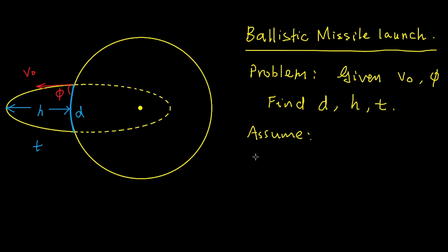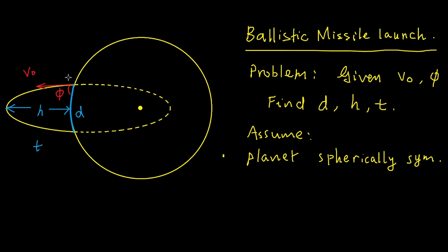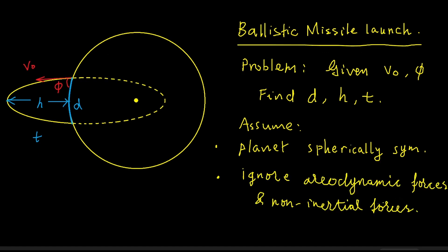We are going to make a few simplifying assumptions. First, we assume that the planet is spherically symmetric. This allows us to apply the Shell theorem — the planet affects the projectile gravitationally as if all of its mass is concentrated at its center. Second, we are going to ignore aerodynamic forces as well as non-inertial forces, meaning we do not consider air lift, air drag, centripetal, or Coriolis forces.